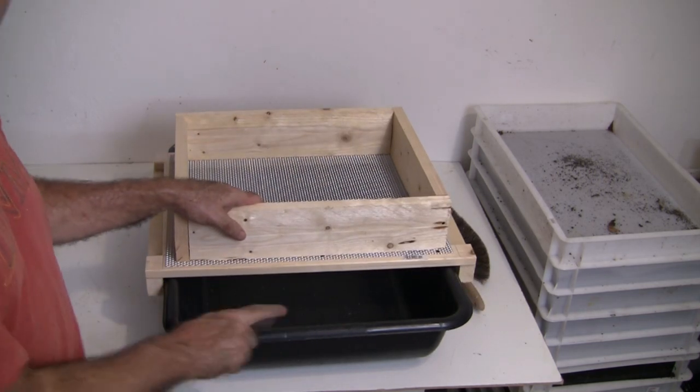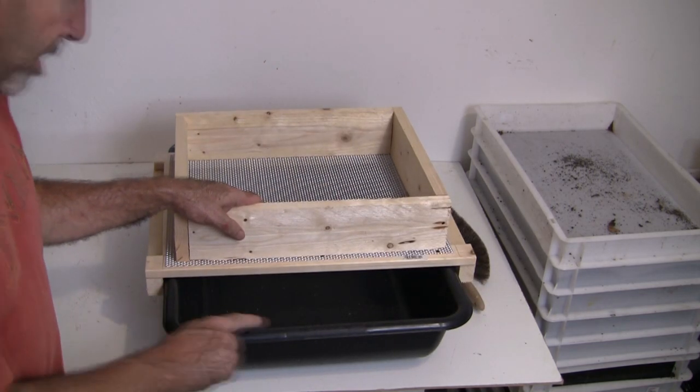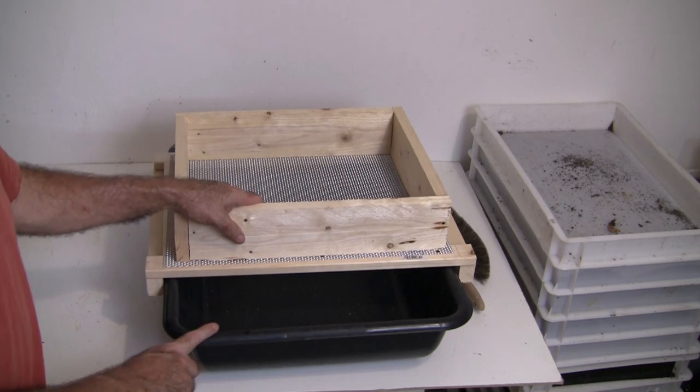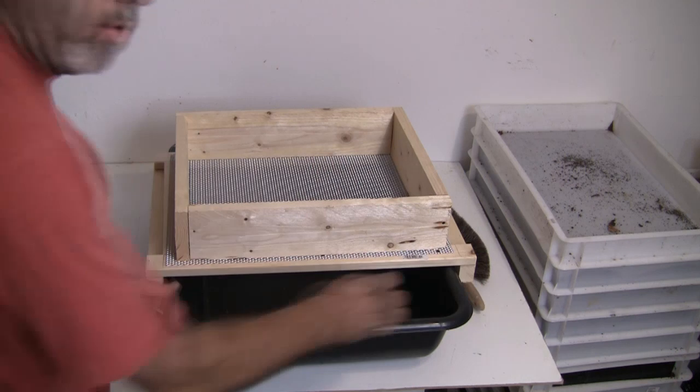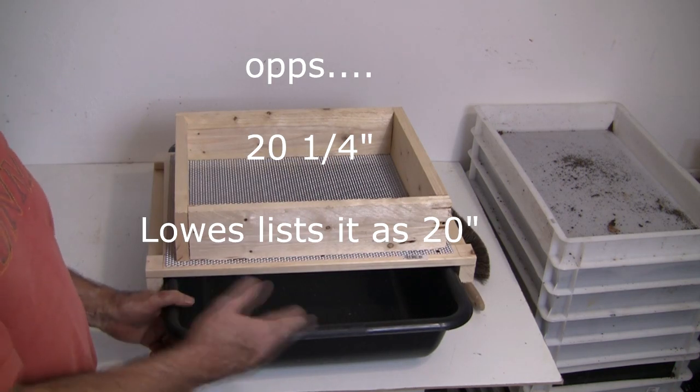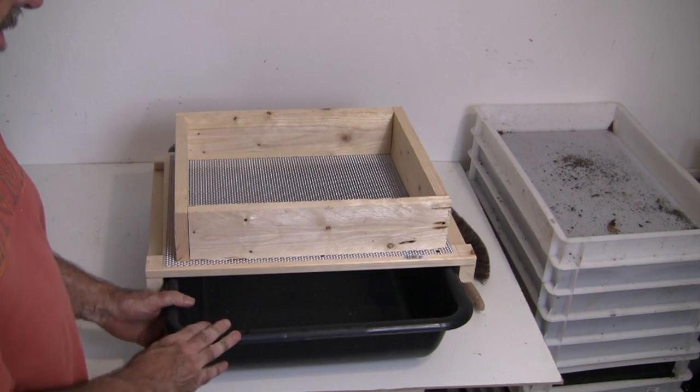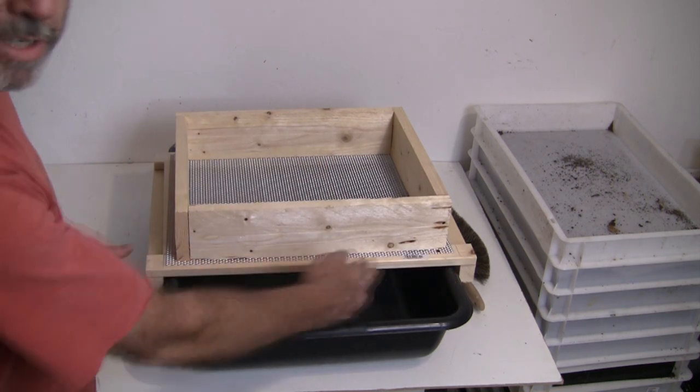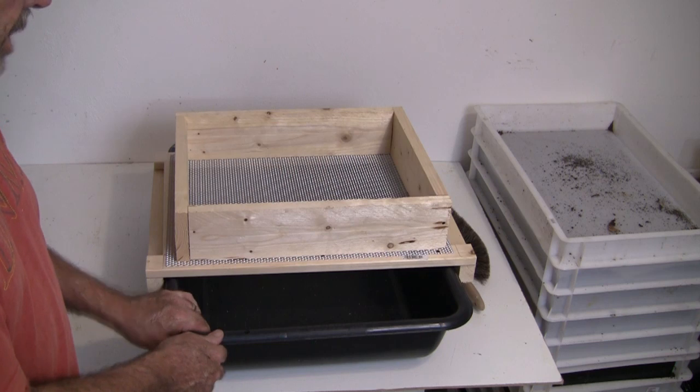It's designed to fit on the Lowe's mortar trays. The brand is Oddjob, O-D-J-O-B. They're 21 and a quarter inches wide, so if you have a mortar tray that's 21 and a quarter, this will fit on it. If not, you could adjust the length that I'm giving you to make it fit that.